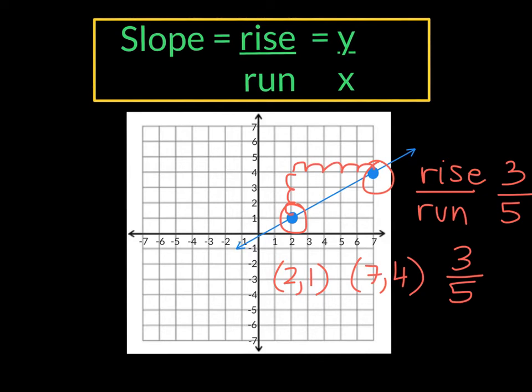See, this is the graph from before and our slope is indeed 3 fifths as well. Now you might be asking me right now, what if we used the second point first and the first point second? Would it make a difference in our slope? And it would not. Watch.